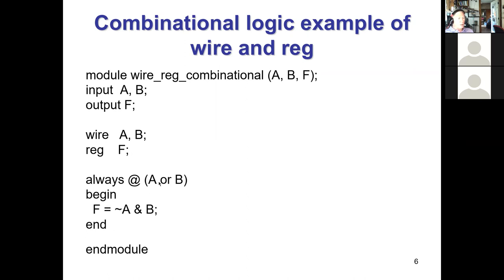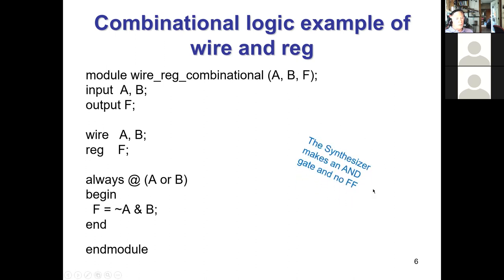We have an always block with A or B — level signals using the old 'or' notation; a comma is preferred but either is legal. Inside the block: F equals the bitwise inversion of A, bitwise AND with B — A-prime AND B. The synthesizer does not create a register even though F is declared as one. What results is just an AND gate with no flip-flop. That's what the synthesizer makes.